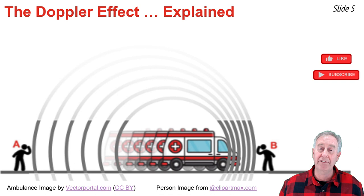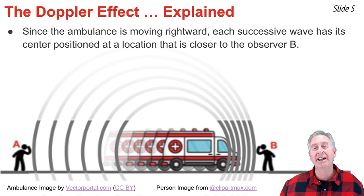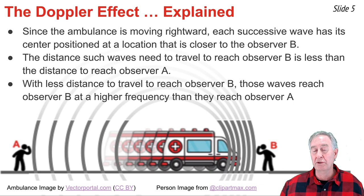Why does the Doppler effect occur? The effect occurs because each successive wave has its center positioned at a location that is closer to observer B than to observer A. The distance that such waves need to travel to reach observer B is less than the distance they need to travel to reach observer A. With less distance to travel, waves will reach observer B at a higher frequency than they reach observer A.